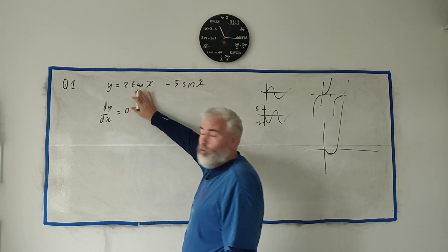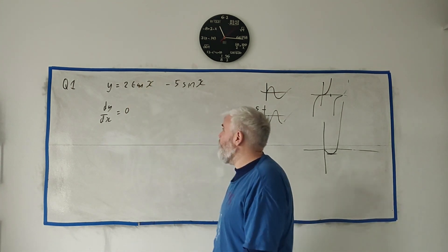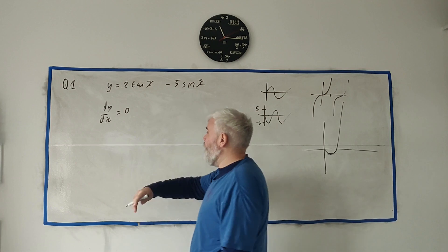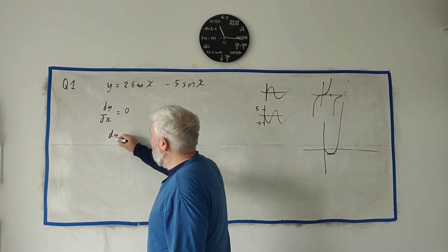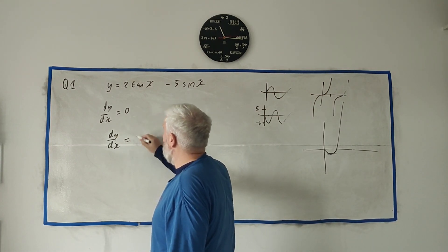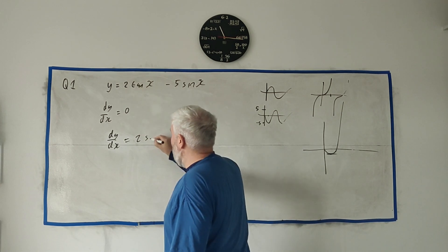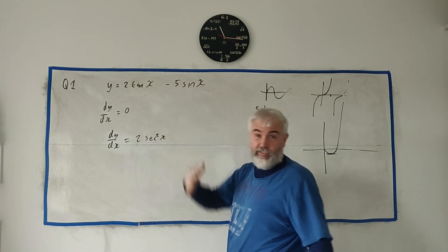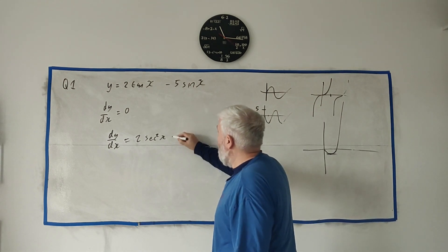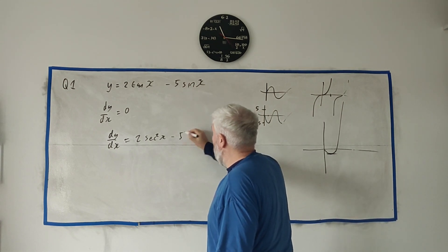So if we go ahead and differentiate this, the derivative of the first term, 2 tan x—tan x is a bit difficult to differentiate, but we can look it up in our formulas, and the derivative here will just be equal to 2 times secant squared x. Again, that's just given to us in our formulas.